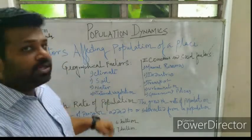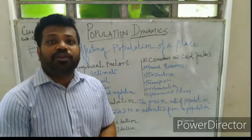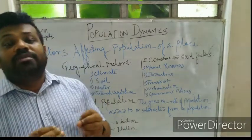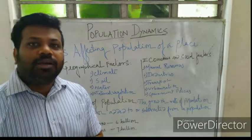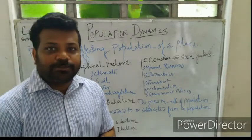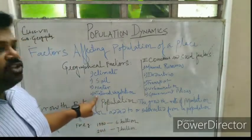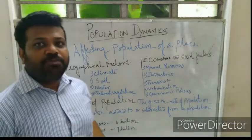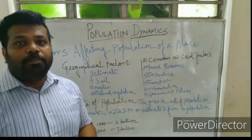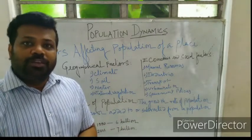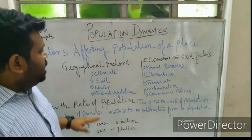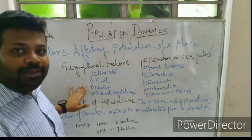Next comes water. Without water, it is very difficult to survive. So where there is a good source of water supply, people prefer to settle in those places. Next is natural vegetation — where there is a large number of trees, people will always be able to live in those parts. So this is all about the geographical factors.